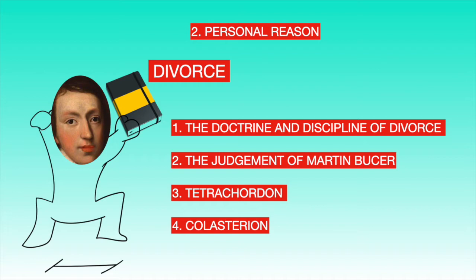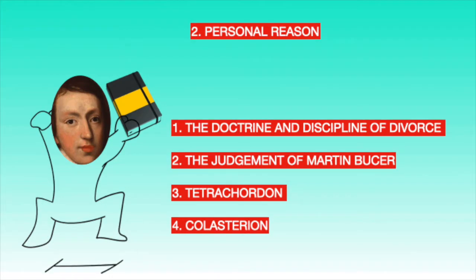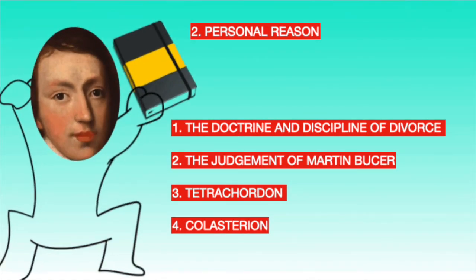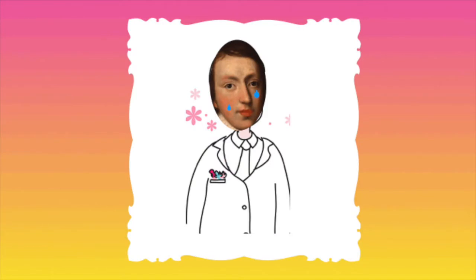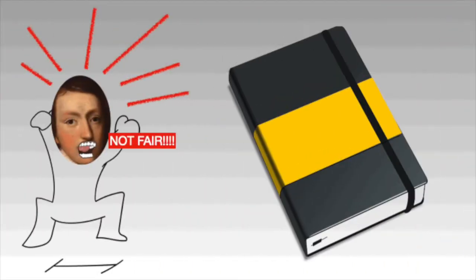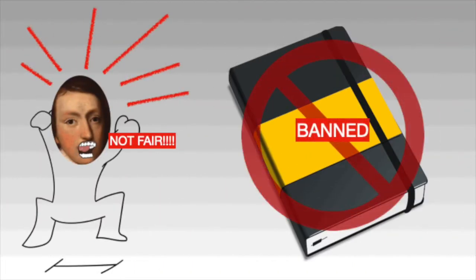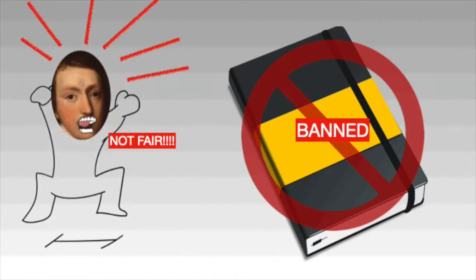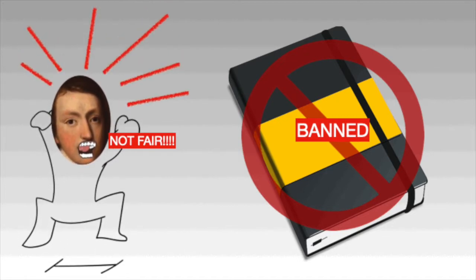These divorce tracts comprised works such as The Doctrine and Discipline of Divorce, The Judgment of Martin Bucer, Tetrachordon, and Colasterion. Milton was inspired to write these works due to the problems he faced in his marriage to his first wife, where due to incompatibility they had differences. Milton was agitated by this unjust ban and retaliated by writing a pamphlet in response.